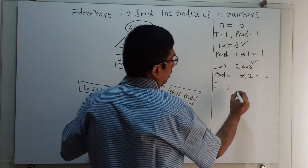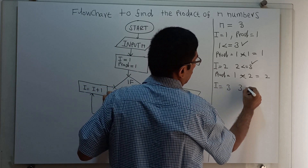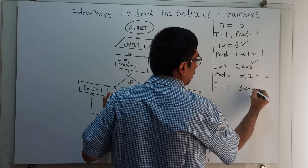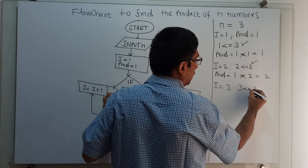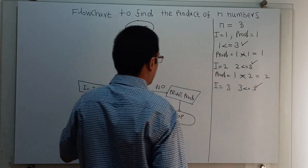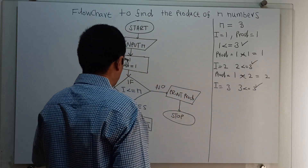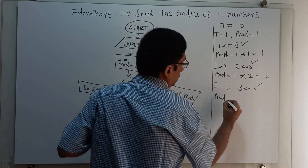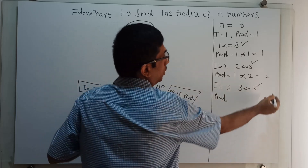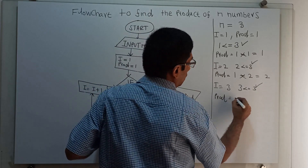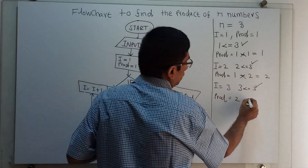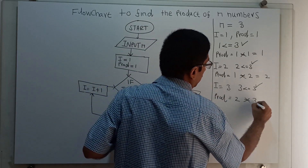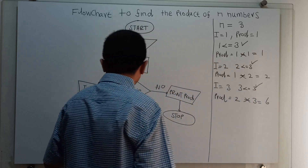I am checking: 3 less than or equal to 3 — 3 is equal to 3, so the less than or equal to condition is true. Prod equal to the existing value of prod, which is 2, into i equal to 3, which gives prod equal to 6.